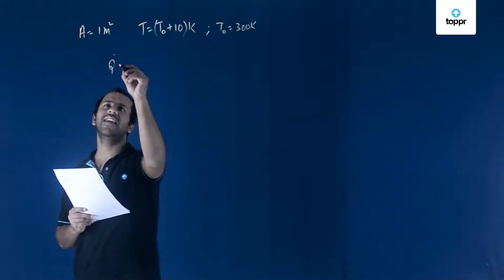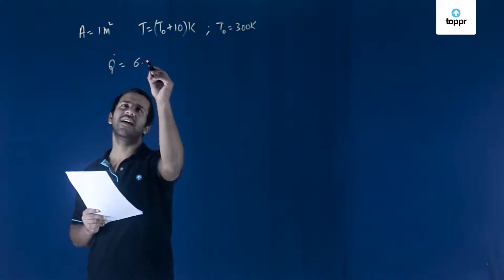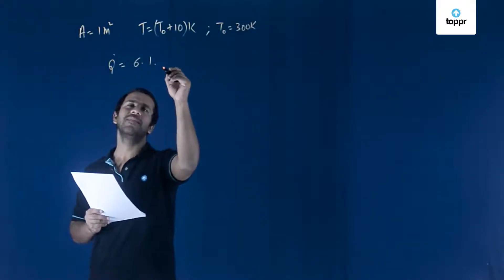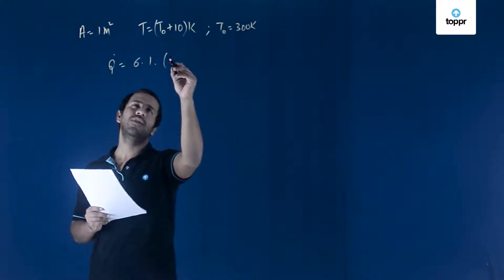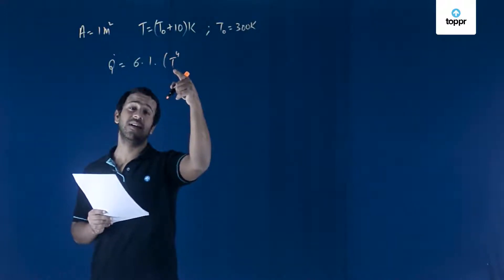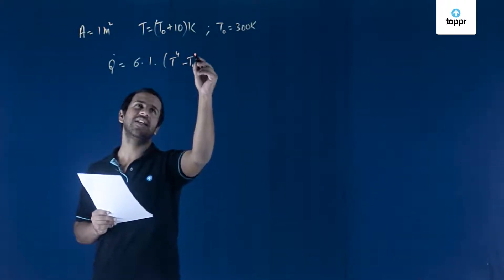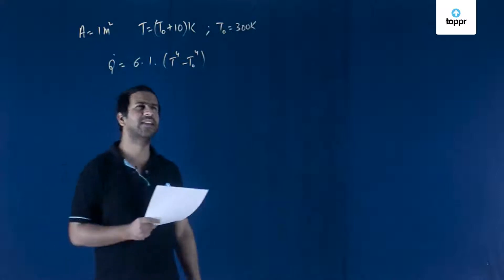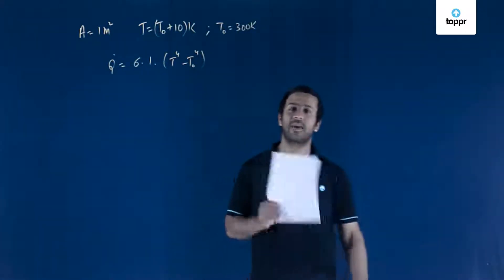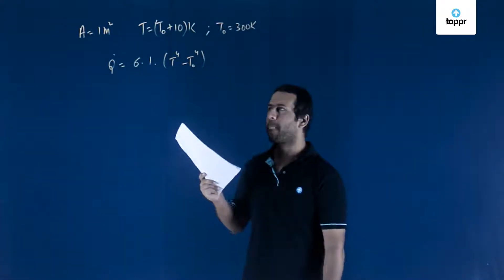The amount of heat that is radiated is sigma into area, which is 1, into T raised to 4, which is the body temperature, minus T0 raised to 4. We are treating this body like a perfect black body, so we have taken the emissivity to be 1.